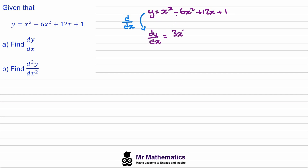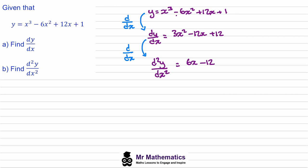When we differentiate each of the terms we get 3x² minus 12x plus 12 — the constant just goes. That's part a. For part b, we differentiate dy/dx again with respect to x, applying the same operation d/dx. This is similar to multiplication notation, so it becomes d²y/dx². When we differentiate this with respect to x we get 6x minus 12, and then the constant goes.